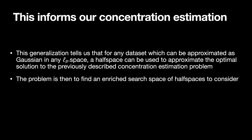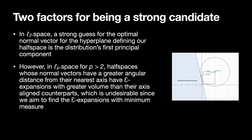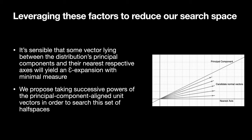The problem then becomes enriching the infinite set of half spaces constituting our search space. In L2 space, the obvious choice for the optimal normal vector defining a half space to represent our error region is the distribution's first principal component. However, this breaks down in Lp space for p greater than 2. In these spaces, the epsilon expansion of the initial error region will have a volume that grows with the cosine distance of the normal vector candidate from its nearest axis. Since we are trying to minimize the measure of the expansion, it is preferable to have more axis-aligned normal vectors defining the error region candidate half space. A sensible search space to yield epsilon expansions with minimal measure is to iterate through vectors lying somewhere between a distribution's principal components and their respective nearest axes. We propose iterating through these vectors by taking successive powers of the principal component aligned unit vectors.